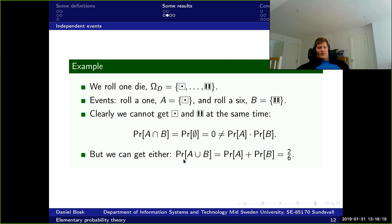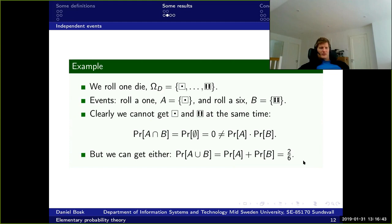However, we can get either a one or a six — A or B — which is the probability of getting a one plus the probability of getting a six, so that's two over six as expected. We can say that A and B are at least not independent.